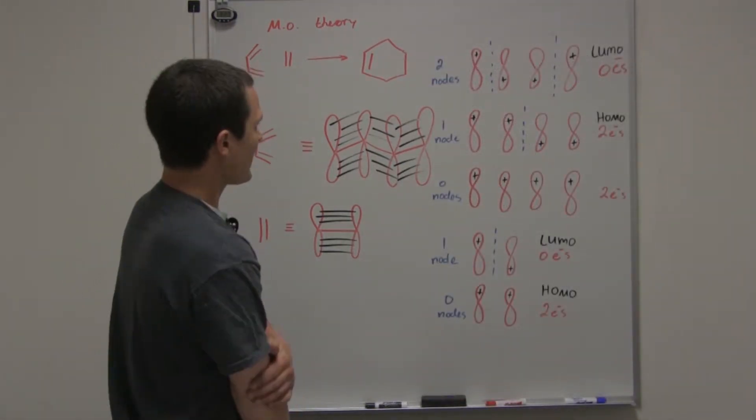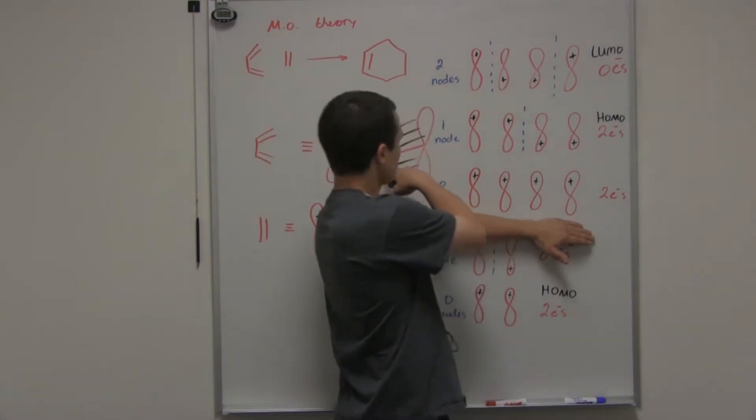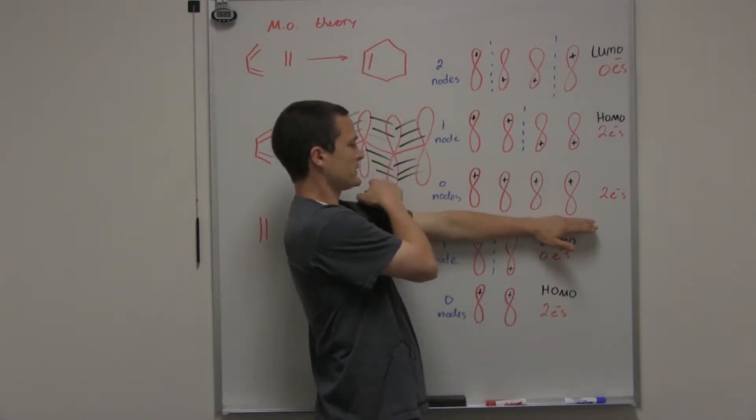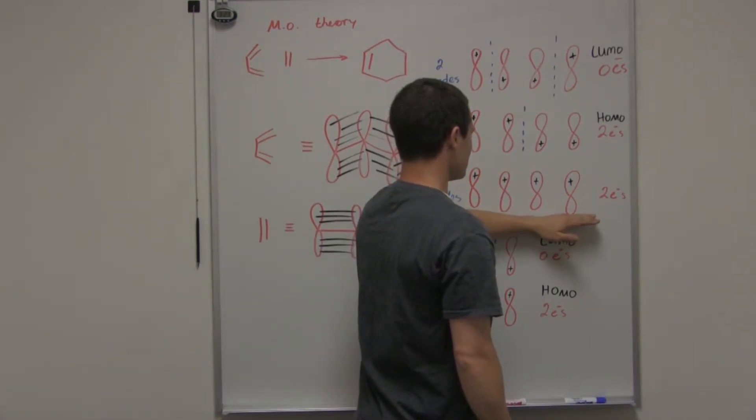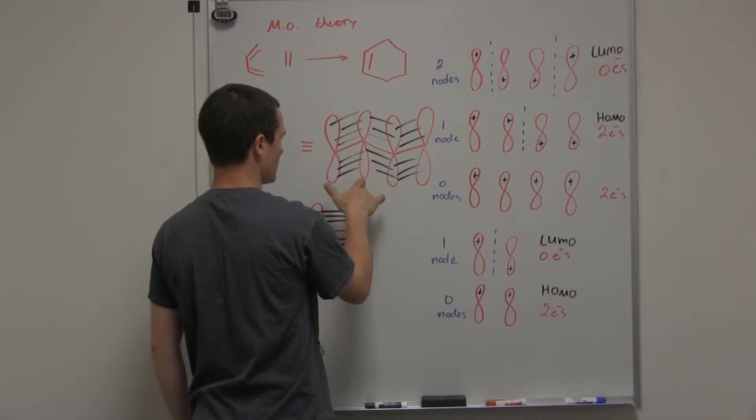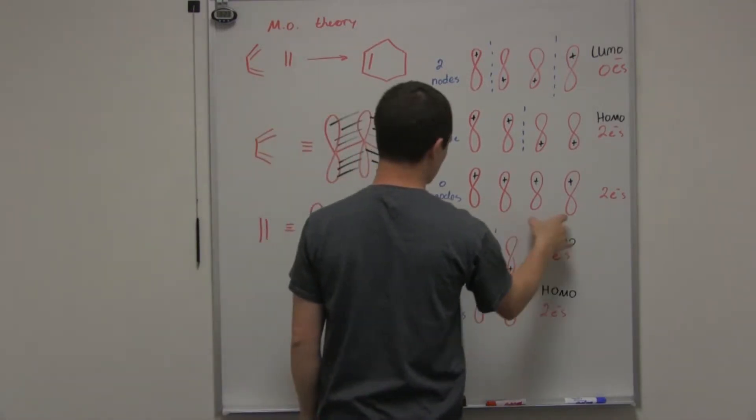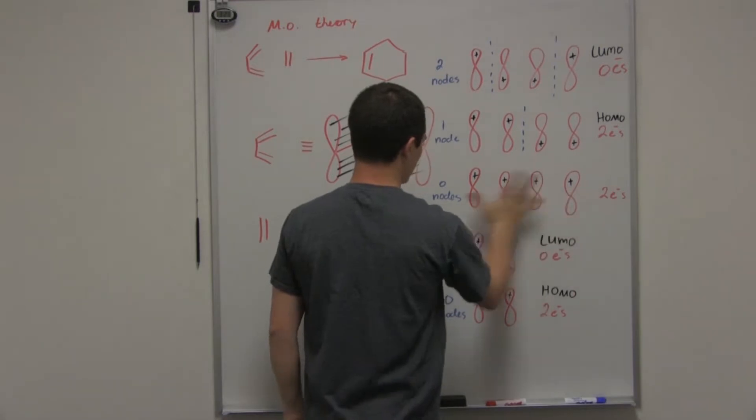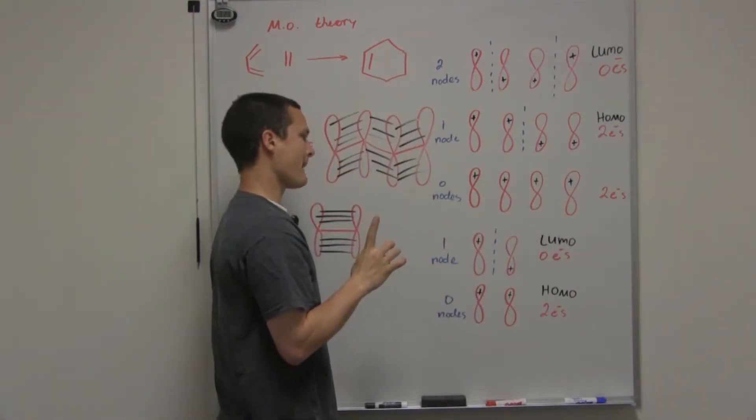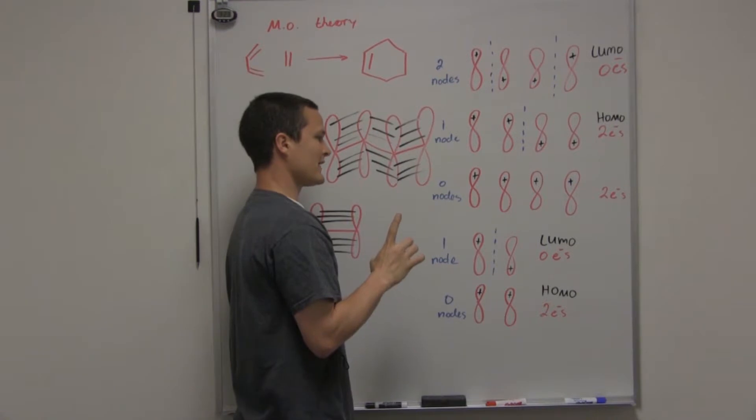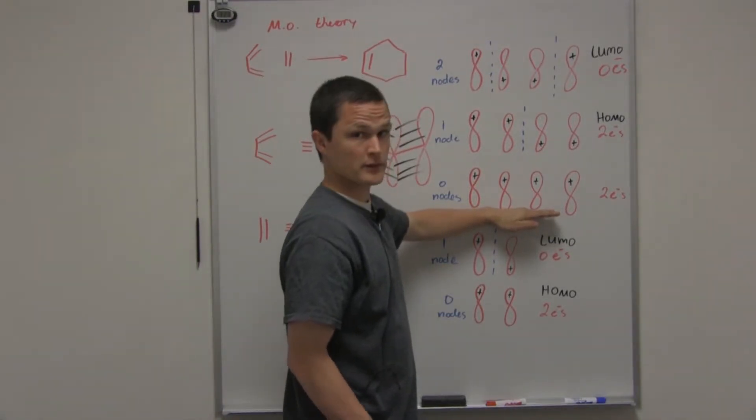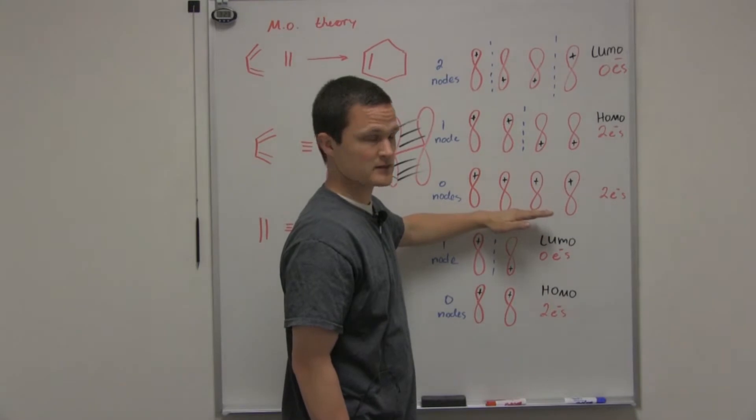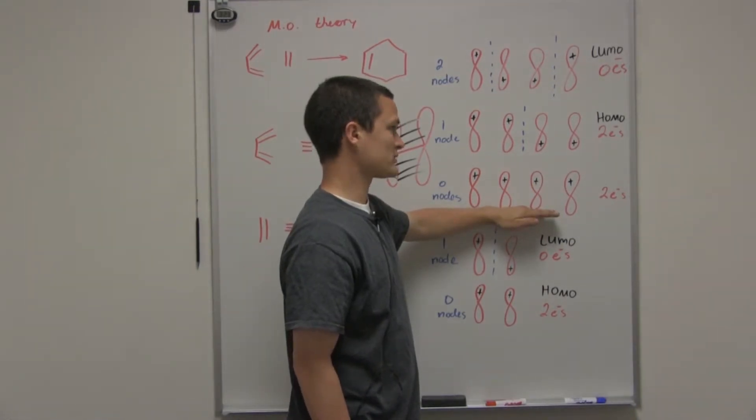Continuing on, I've gone through and diagrammed the molecular orbitals pertaining to the diene. What we do is we take each atom and we draw a P orbital. And this whole thing together represents one molecular orbital. In the lowest occupied molecular orbital, which is the LUMO, we have zero nodes. Everything is in phase, and this is the most stable state for the electrons to be in.